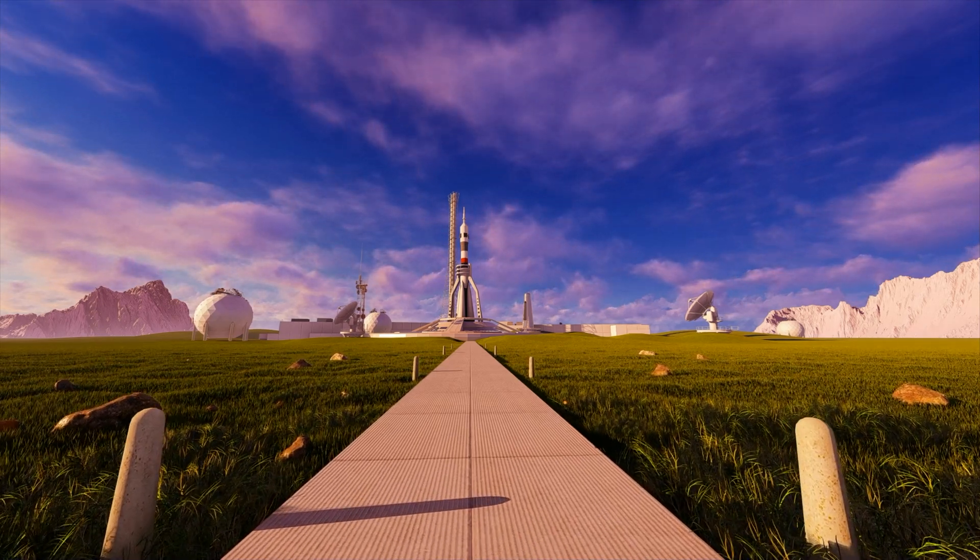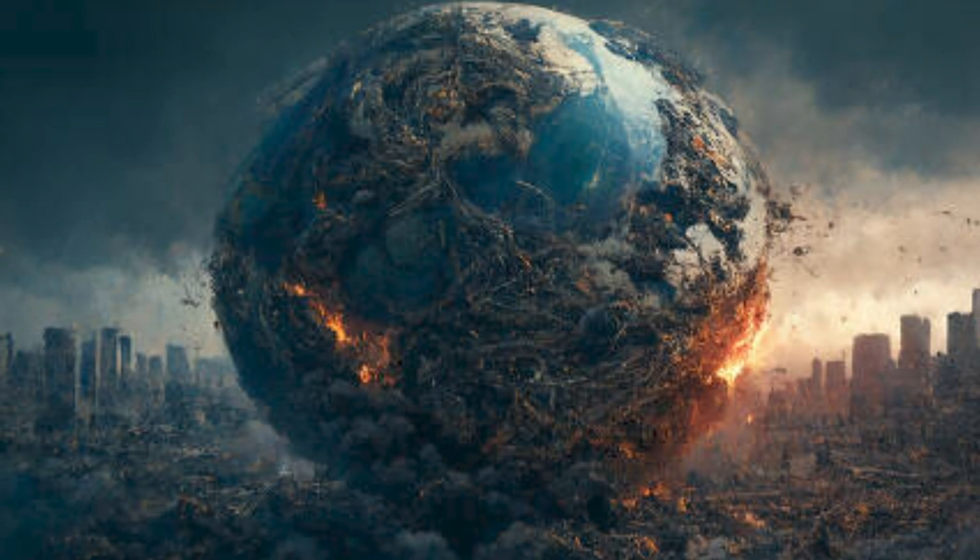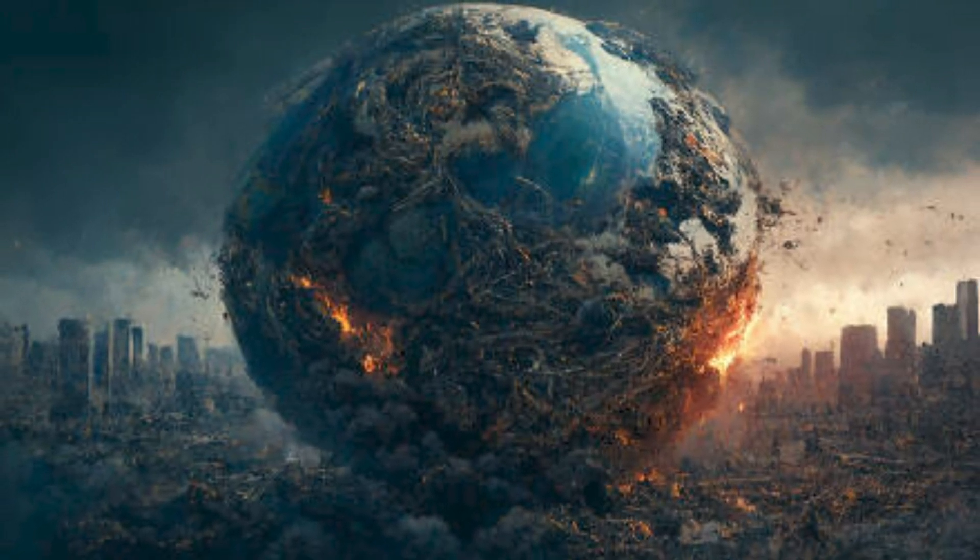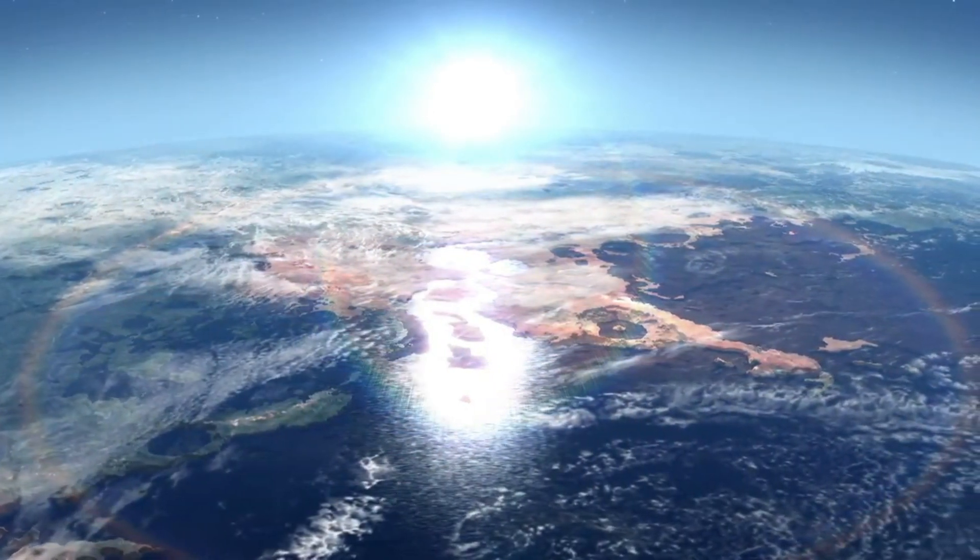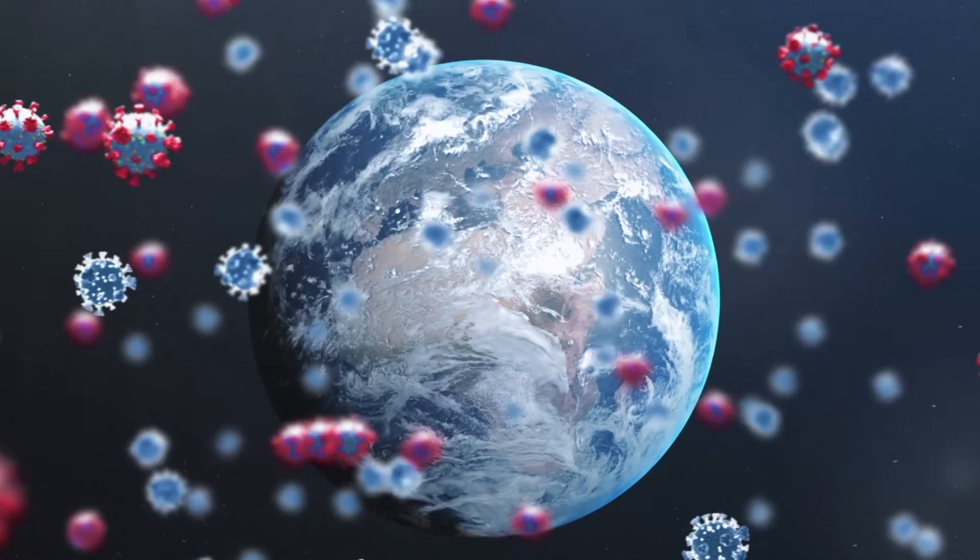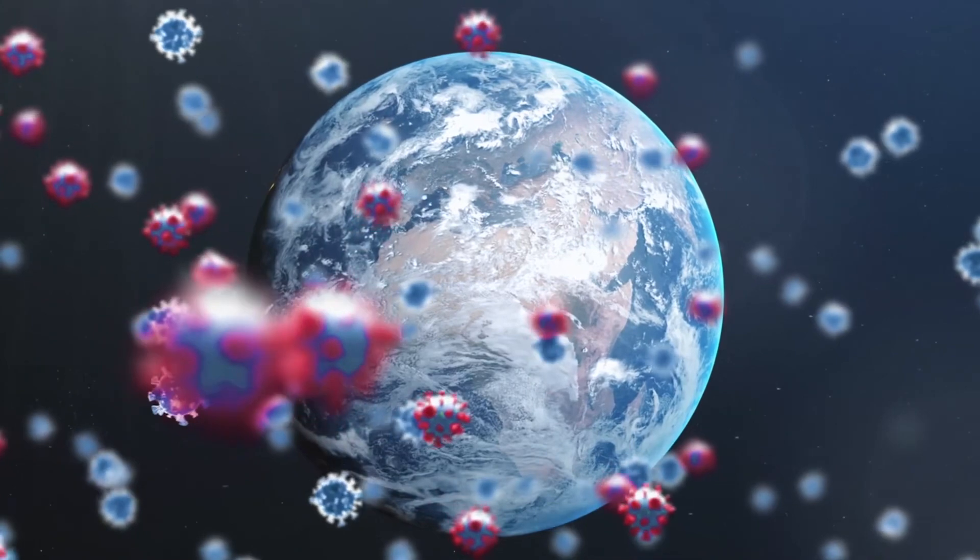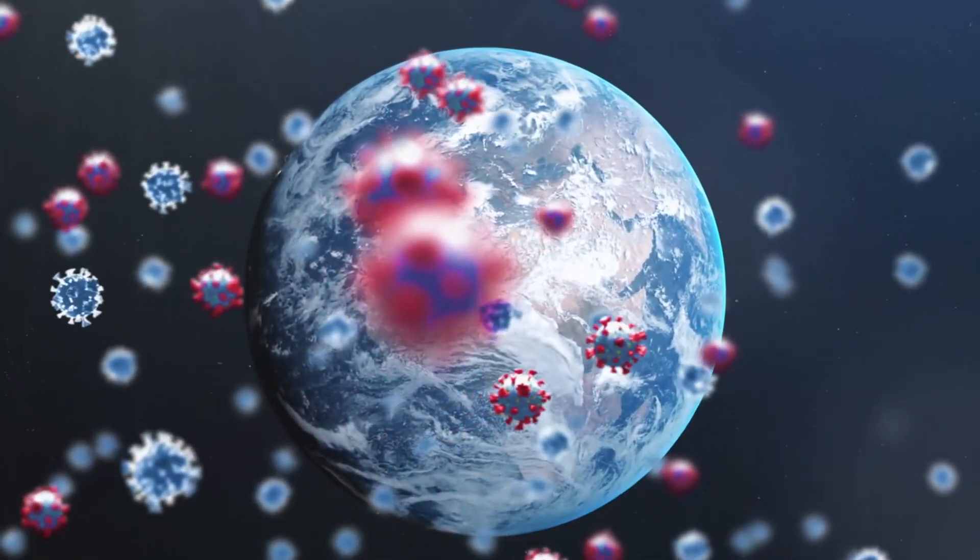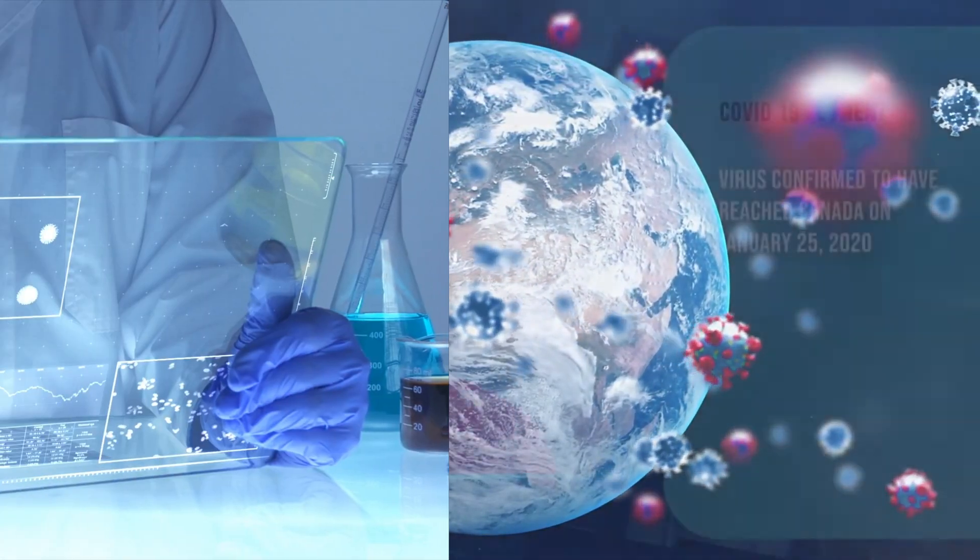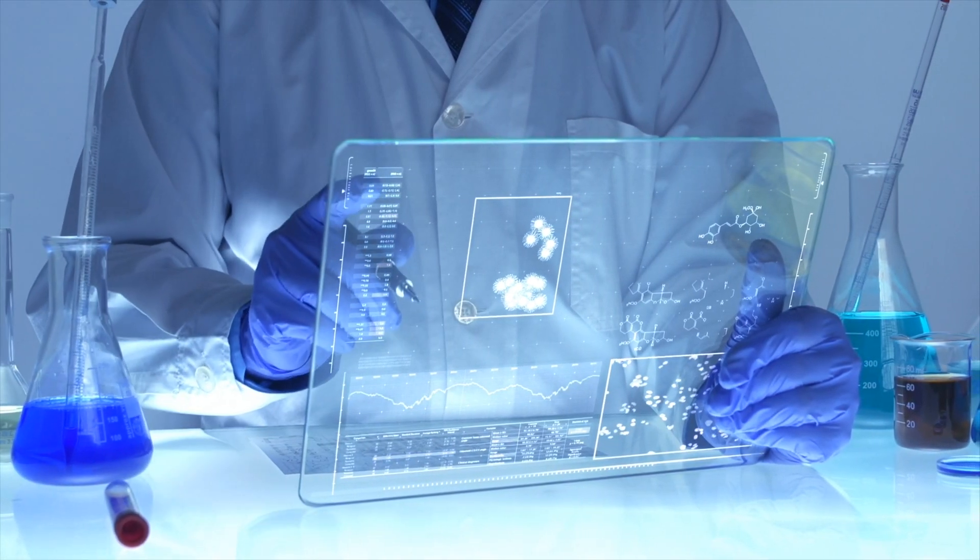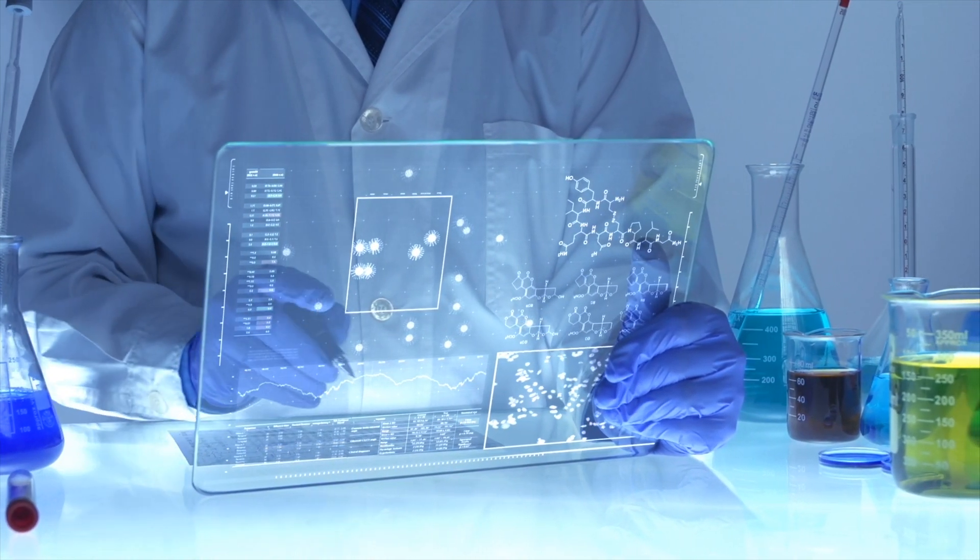This could disrupt ecosystems, cause the displacement or extinction of native species, and disrupt ecological balances that have been established over millions of years. The introduction of invasive species to Earth has already shown how devastating such ecological disruptions can be. The risks extend beyond biology and ecology. The possibility of Martian microbes carrying bioactive compounds or interacting in unforeseen ways with Earth materials and technologies presents a variety of environmental and safety hazards. These risks require rigorous containment and study protocols, similar to those used to handle dangerous biological agents or unknown substances.